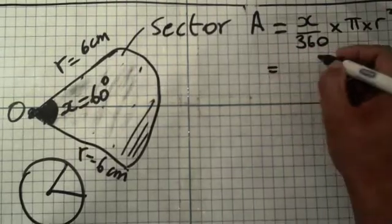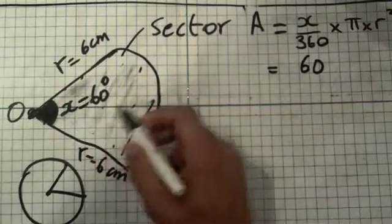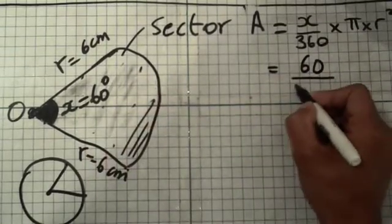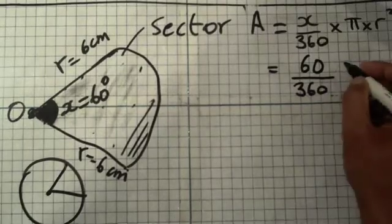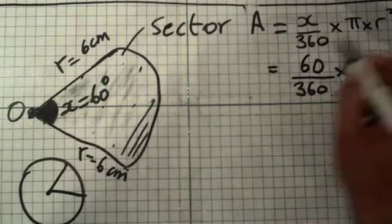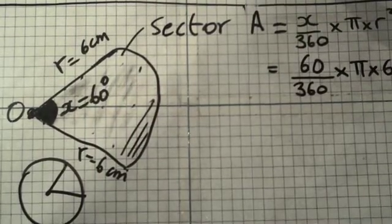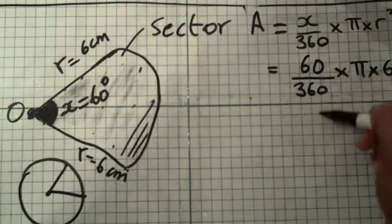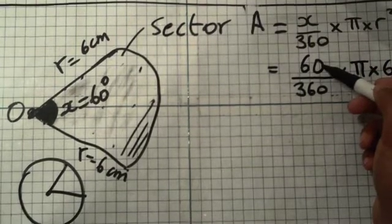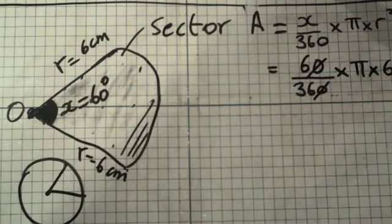So the area is going to be x over 360 times pi times r squared. So this is the same thing as having 60—I'll replace the x with 60 because x is equal to 60—over 360 times pi times r. R is equal to 6, so I'm going to write 6 squared. Now, when you're doing a fraction and you've got a zero at the top and bottom, you can cancel that out because there are tens.